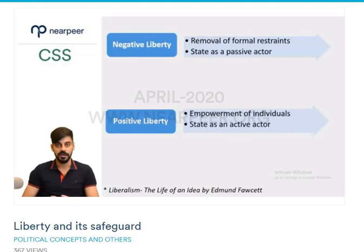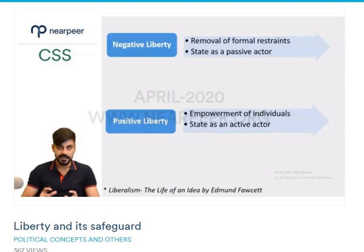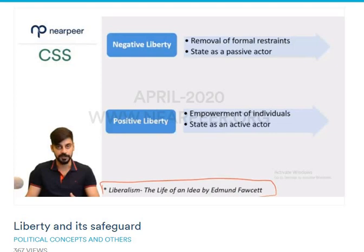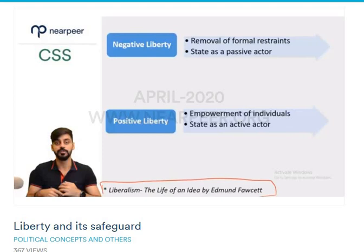The next important topic is the two types of liberty. The interpretation I am using for the concepts of negative liberty and positive liberty is from the book 'Liberalism: The Life of an Idea' by Edmund Fawcett, a great liberal thinker of the 21st century. In this book, he traces how liberalism has evolved philosophically, how it has translated in political theory, and how it has translated into action by different liberal politicians and statesmen.